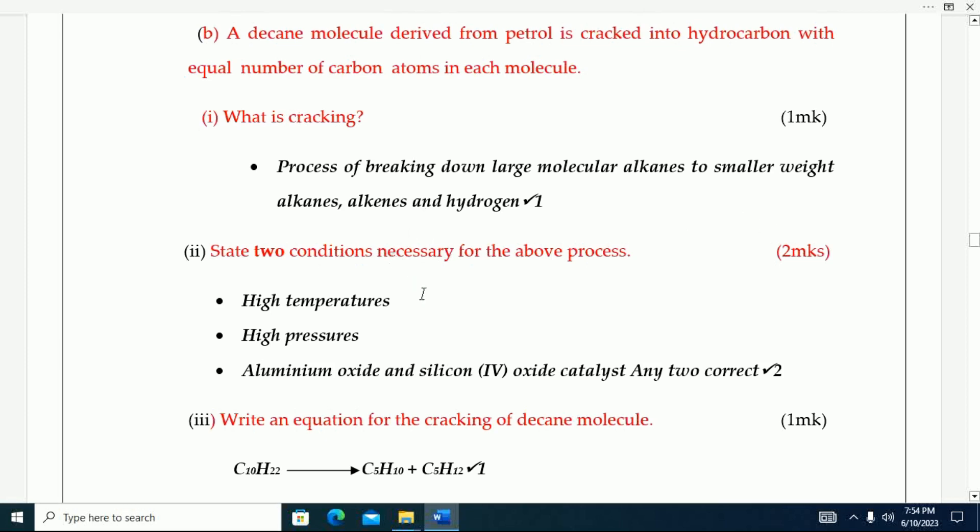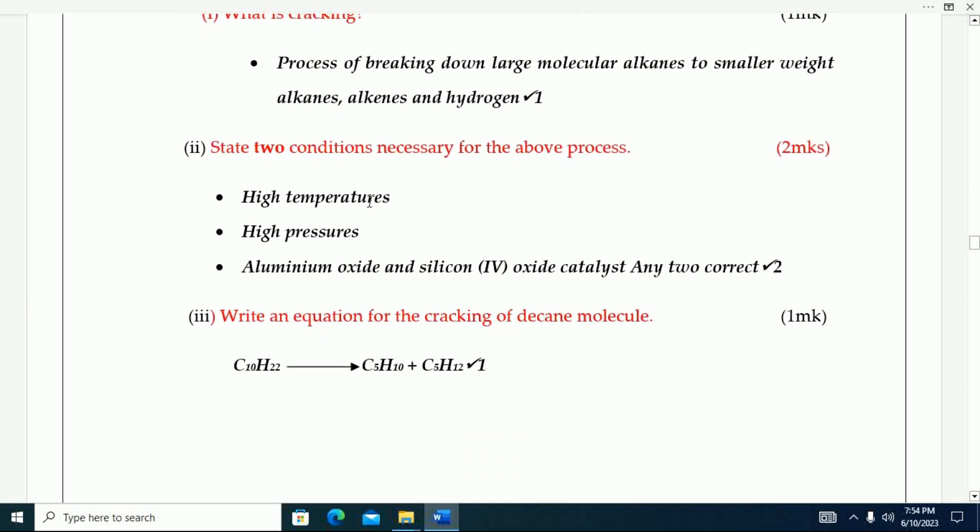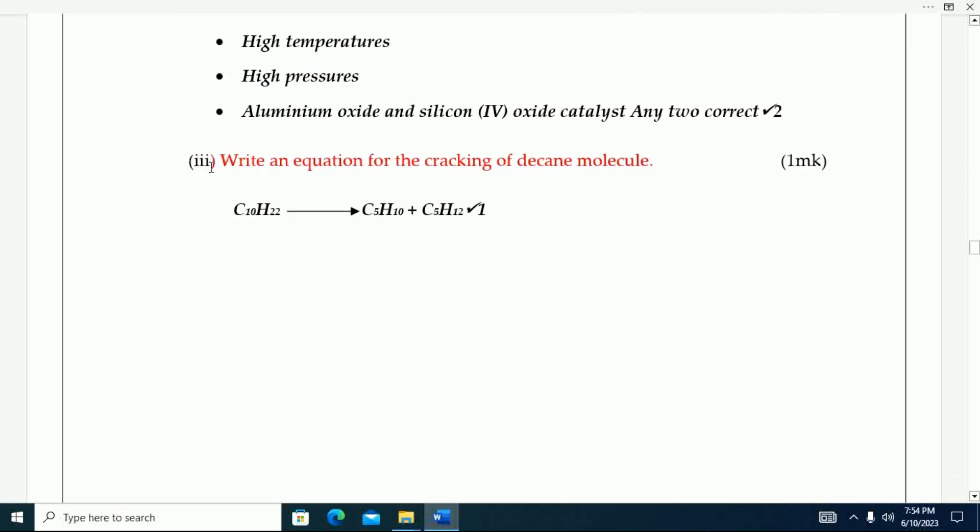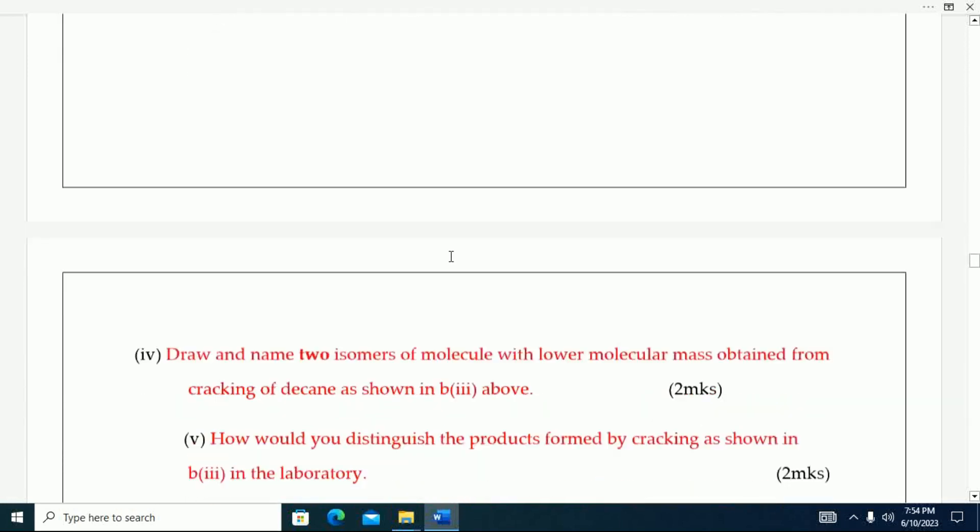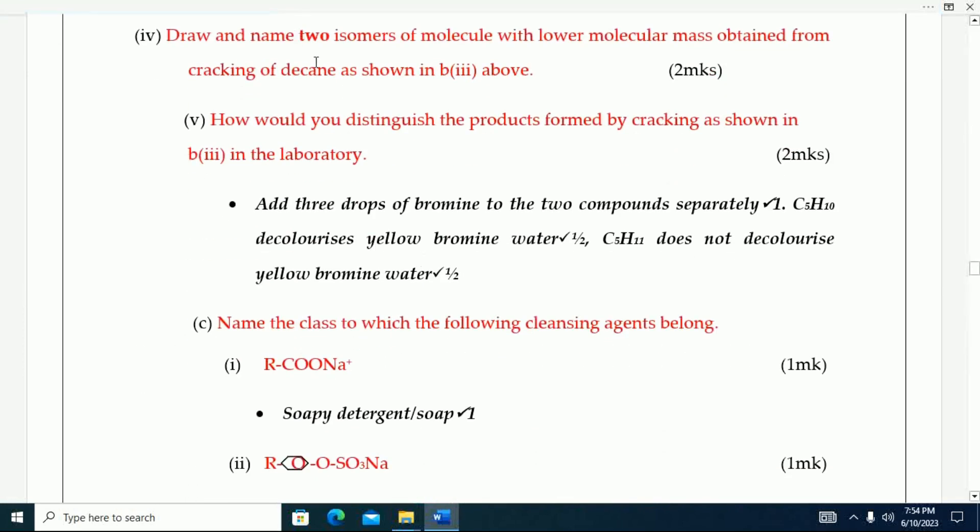State two conditions necessary for the process. That one is high temperature, high pressure, and aluminum oxide and silicon dioxide catalysts. Next, write an equation for cracking of decane molecule. That one you get that one.